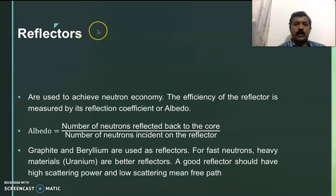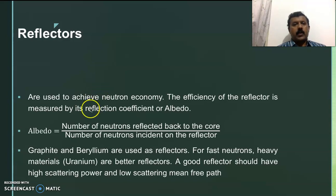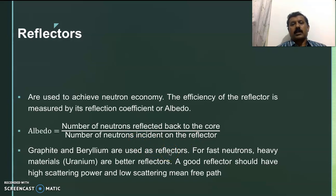The third important element used in a reactor is the reflector. Reflectors play a significant role in the reactor — they increase neutron economy, save fuel, and help in achieving more power output. A good reflector should have a high reflection coefficient, also called the albedo ratio. Albedo is the ratio of the number of neutrons reflected back to the core to the number of neutrons incident on the reflector. Graphite and beryllium are used as good reflectors. For fast neutrons, uranium-238 is also used as a good reflector. A good reflector should have high scattering power and low scattering mean free path.